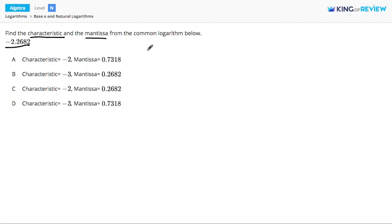Let's think about what characteristic and mantissa refer to. We can write a logarithm as the sum of a characteristic and a mantissa. It always has to be a sum, meaning the mantissa always has to be a positive number.